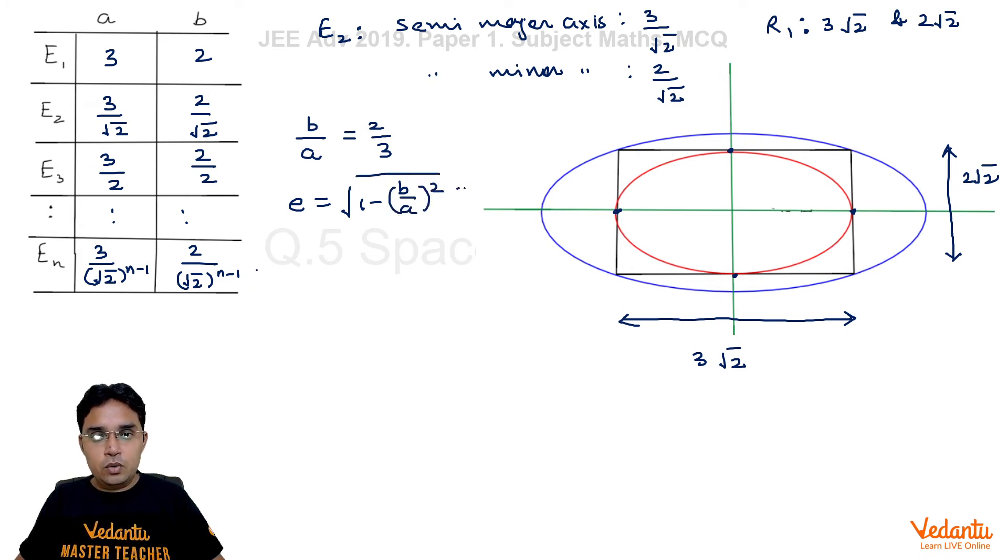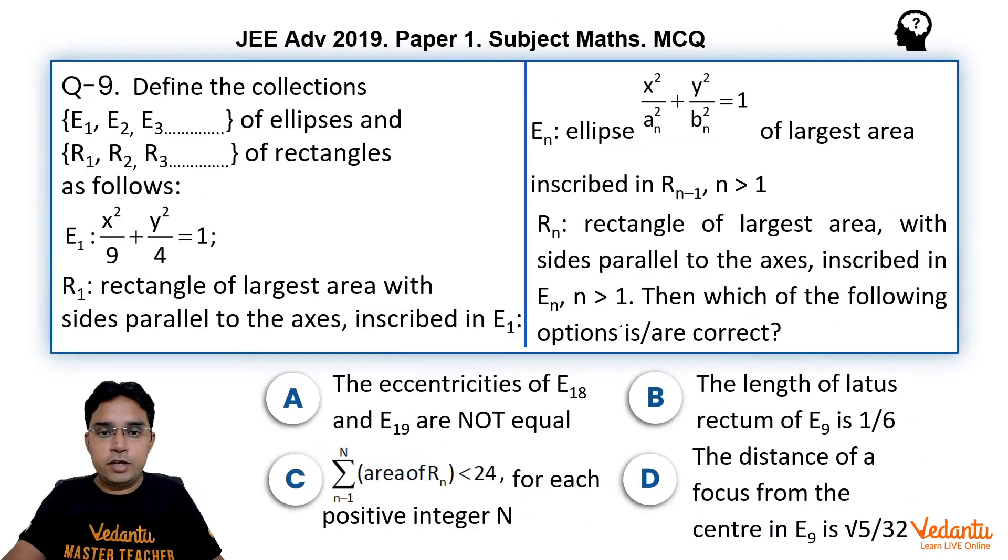So this will be √5/3. So option A is definitely wrong.